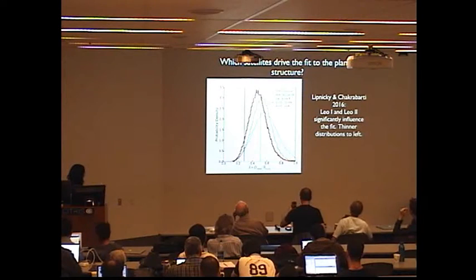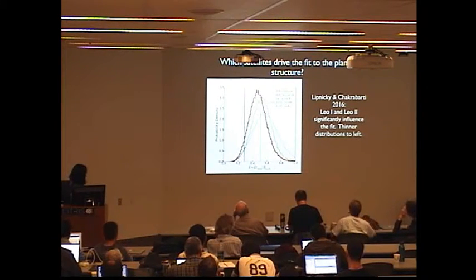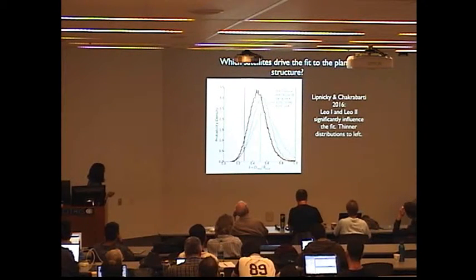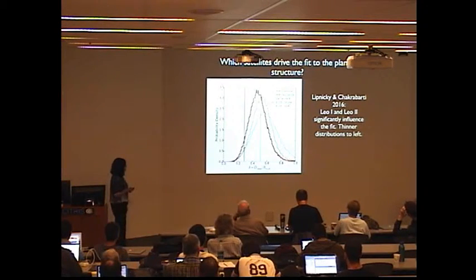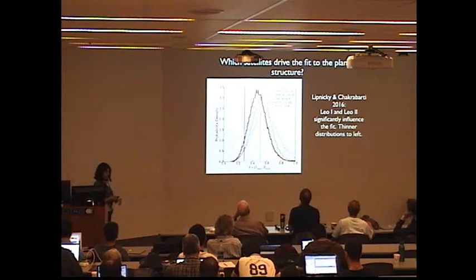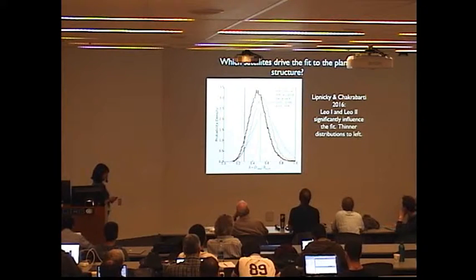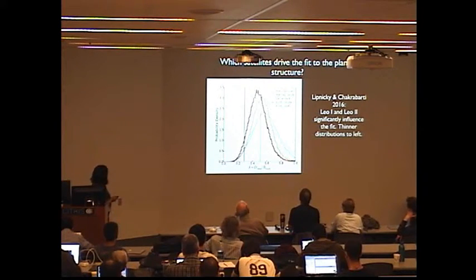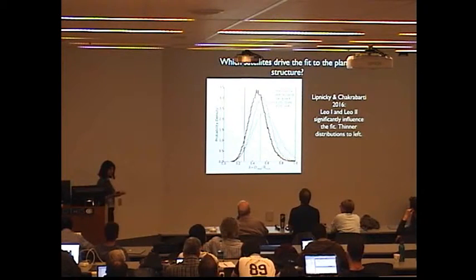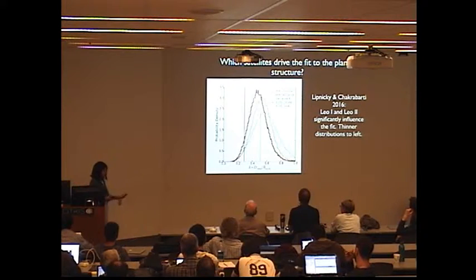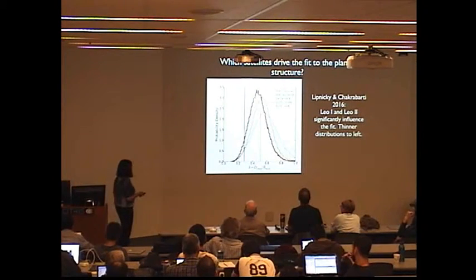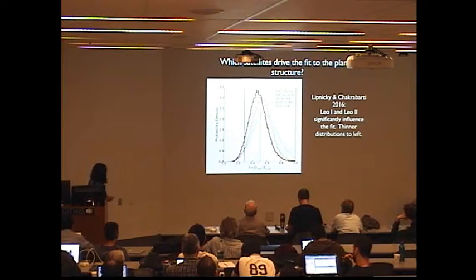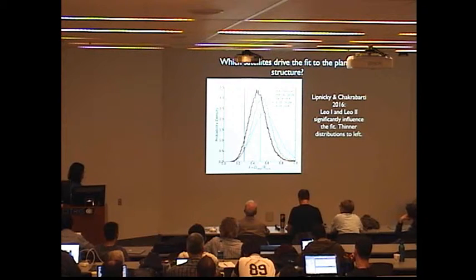So what we're doing here is comparing to the Elvis simulations as well as the Aquarius. Here is the Milky Way plane for all 11 satellites, and here is Milky Way without LEO-1 and LEO-2. So you can see that if you do not include LEO-1 and LEO-2 in your best fit plane, then the cosmological simulations are consistent with the Milky Way's distribution of dwarf galaxies. In other words, if you exclude LEO-1 and LEO-2 from the vast polar structure, it becomes consistent with dissipationless cosmological simulations like Elvis and Aquarius. So thinner distributions here are going to be towards the left.